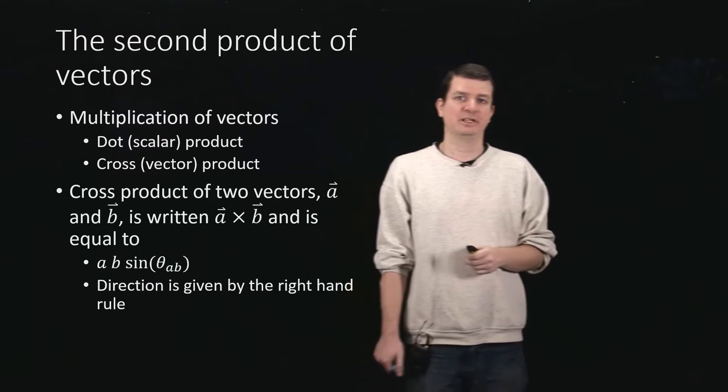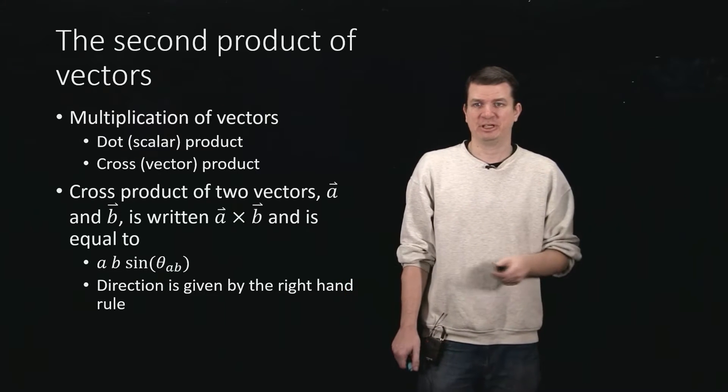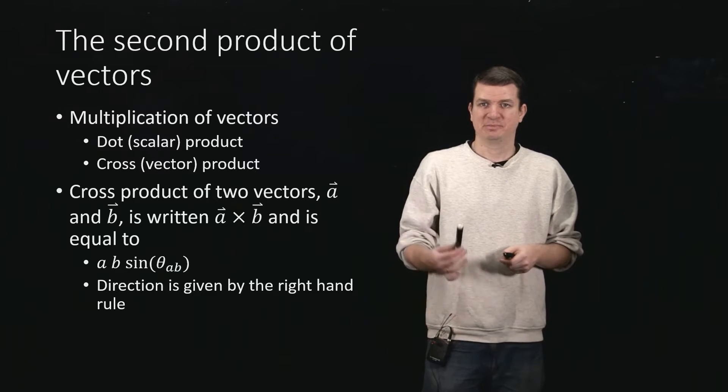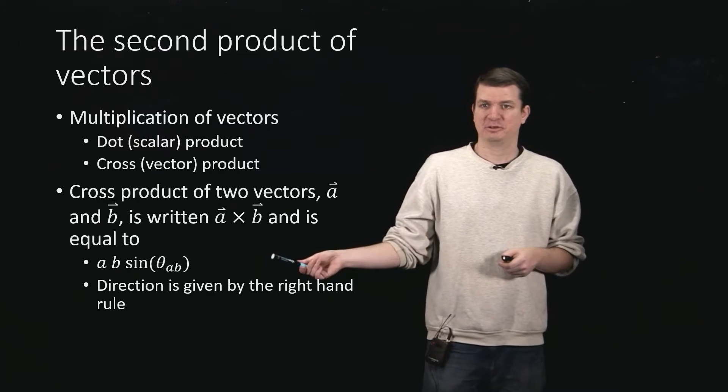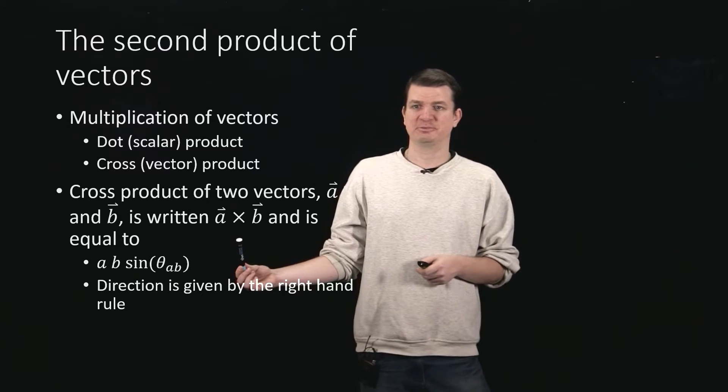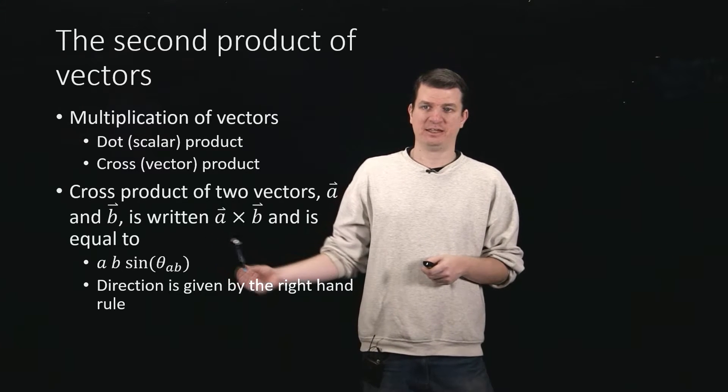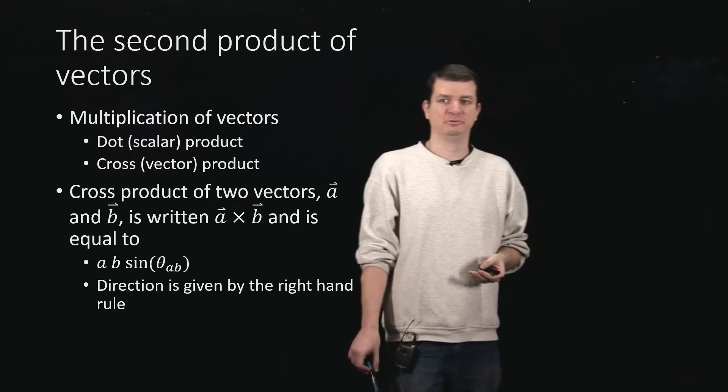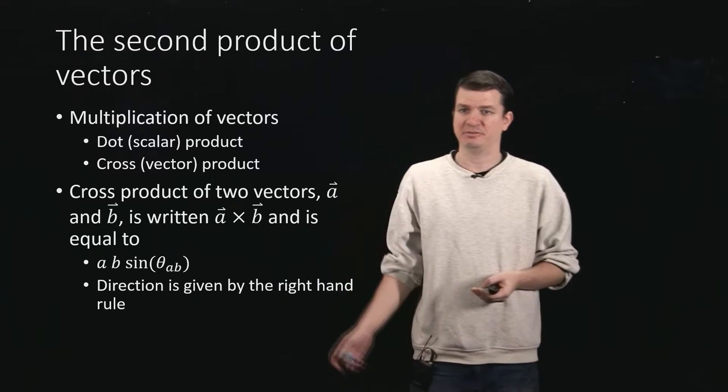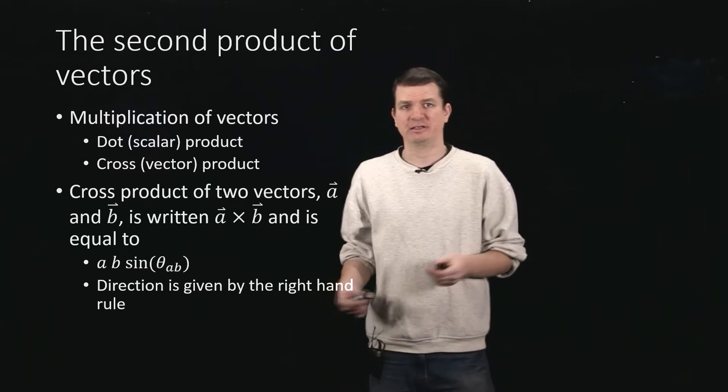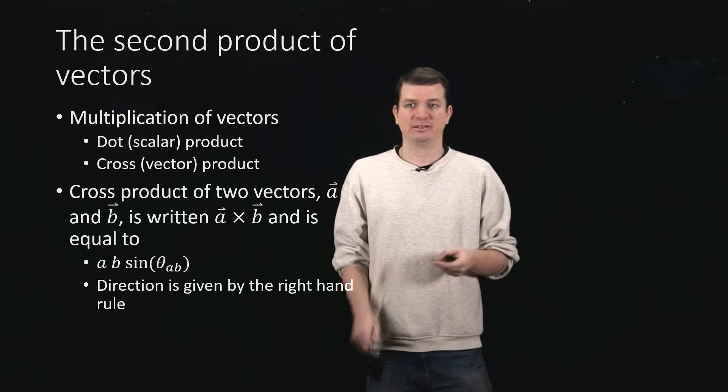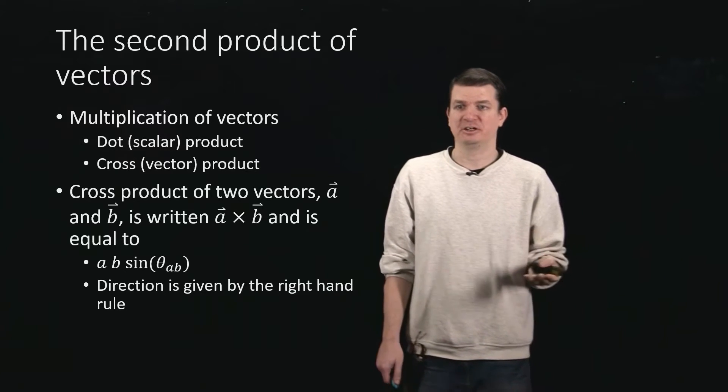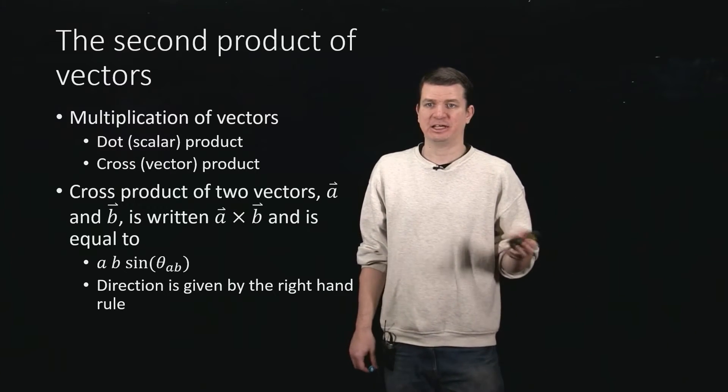For notation, to distinguish between the dot and the cross-product, we use the cross symbol for this vector product of two vectors a and b. In terms of computing that, what it boils down to is you take the magnitude of a, multiply by the magnitude of b, and multiply by the sine of the angle between them. Remember, the dot product has a cosine, this one has a sine.